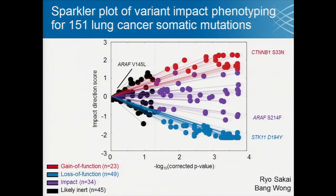We represent these two features on a plot we're calling a sparkler plot. The x-axis shows the corrected p-value of the test to determine if there's a functional impact, so anything that falls below our FDR cutoff is predicted to be inert. For the comparison between wild type and mutant, things that look like a gain of function are shown with a positive score, and those predicted to be loss of function get a negative score.